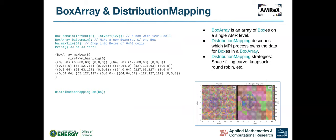BoxArray is an array of boxes on a single AMR level. You can start with a box that has, say, 128 cells, create a BoxArray with a single box, and then chop it into smaller boxes. When you print it out, you can see it broken into eight boxes — from 0 to 63, then 64 to 127, and so on. In practice, you don't usually need to make your own BoxArray manually, because we provide utility classes that help you create them.